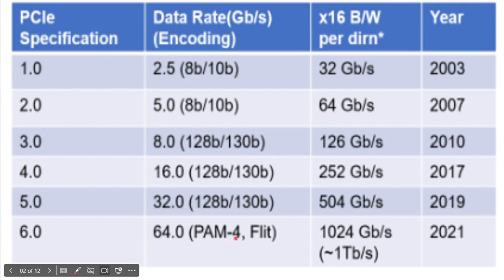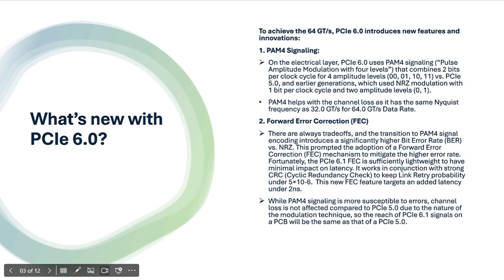That's why, without increasing the frequency, you can double the data rate by choosing Pulse Amplitude Modulation with four levels. Previous generations transmit only one bit per clock cycle, but Gen 6 can transmit two bits within one clock cycle using PAM4 signaling with four levels. However, PAM4 is more prone to errors compared to NRZ because the voltage level is lower, making it more susceptible to noise.